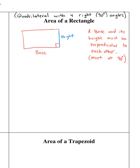Hi, geometry. We are going to cover the area of a rectangle. The first thing we want to keep in mind is a rectangle is a quadrilateral with four right angles, 90 degree angles.